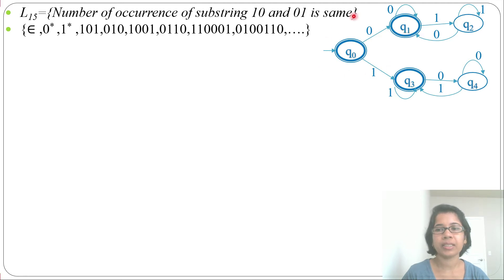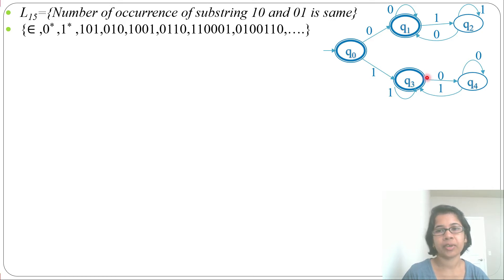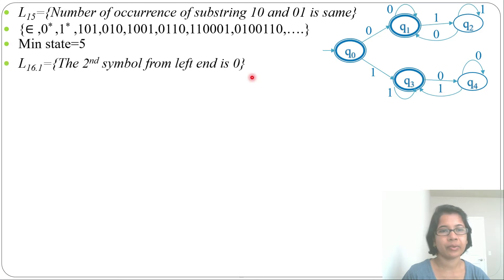So this DFA accepts all strings where the number of occurrences of substring '10' and '01' are the same — however many times '10' is present, '01' is also present the same number of times. The total number of states in this DFA is 5. Now for the next language: the second symbol from the left end is 0.